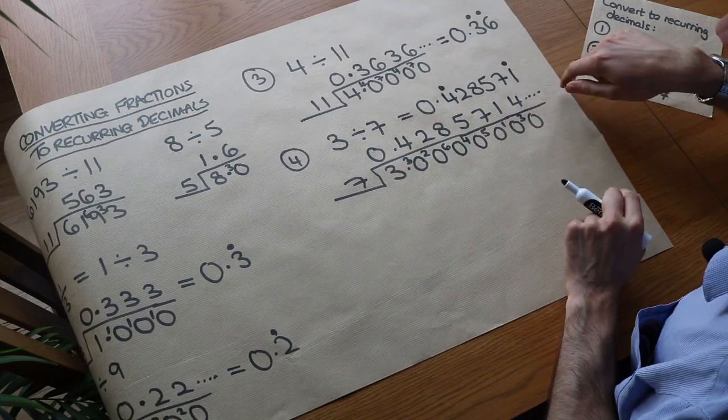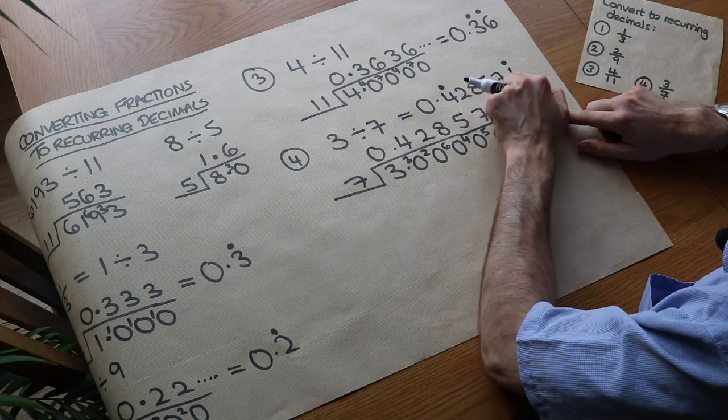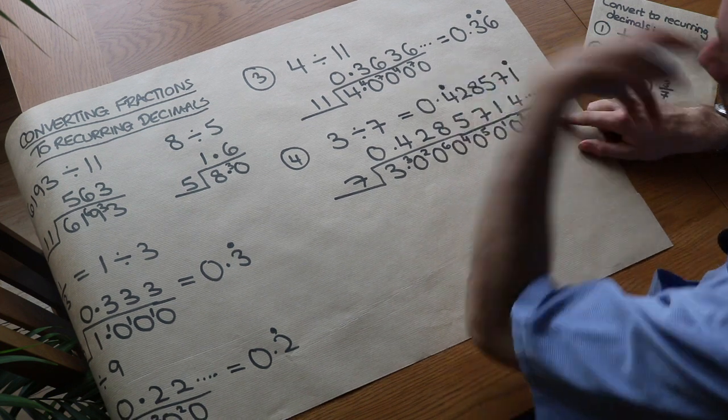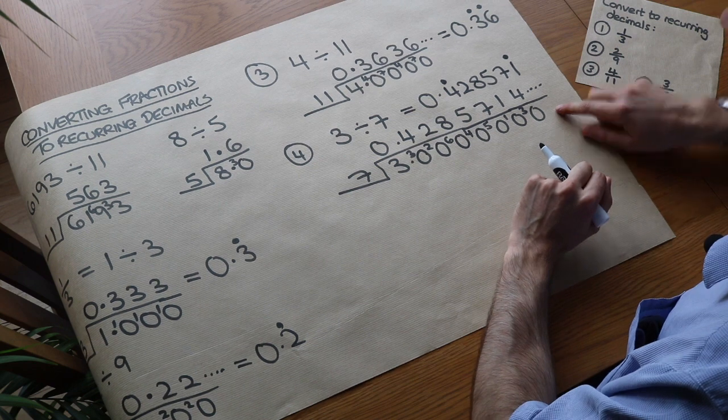Do not put an extra 4 at the end because otherwise it would be 4, 2, 8, 5, 7, 1, 4, 4, 2, 8 and it would be repeating that 4 next to each other. Thank you.